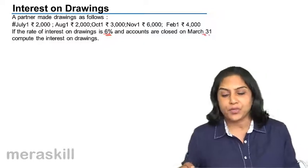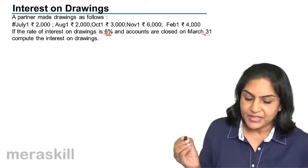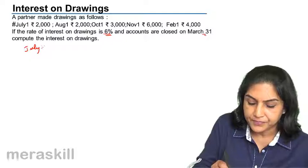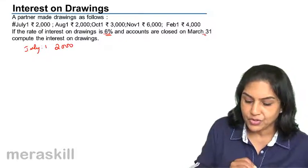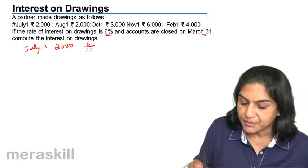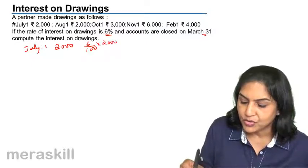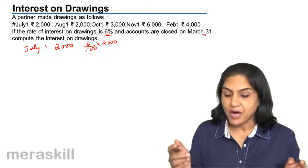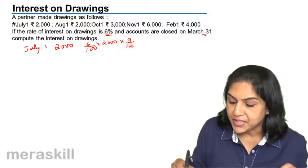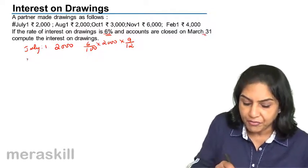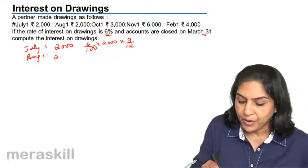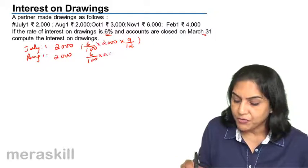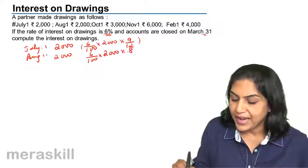How do we compute? Suppose we take 6% interest for each of these drawings. For July, we have drawings of 2000. Interest would be 6% of 2000 for July, August, September, October, November, December, Jan, Feb, and March — we are talking of 9 months here. Similarly, for August, the amount withdrawn is again 2000. Therefore, the interest amount would be 6% of 2000 for 8 months.